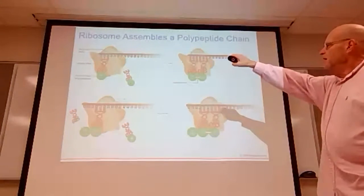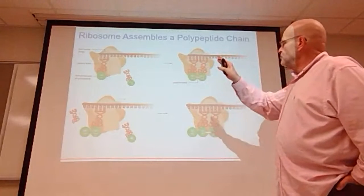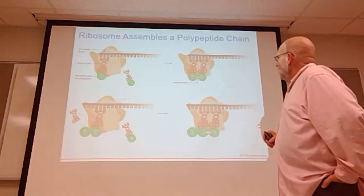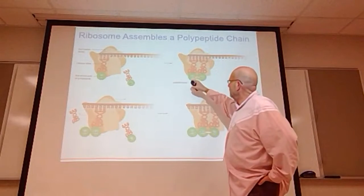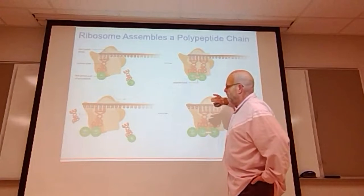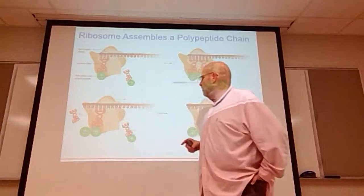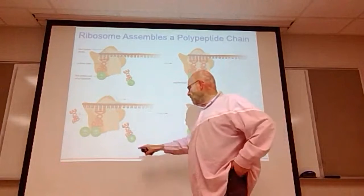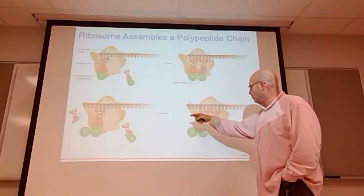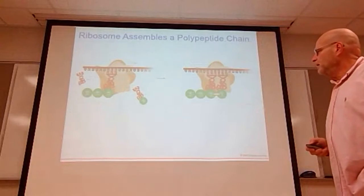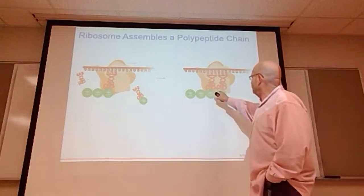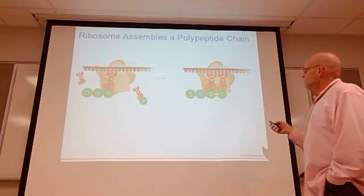In this detailed view: AUG is the start codon; the next three-letter group GUG has the complement CAC, which codes for valine. When valine and the preceding amino acid come into close enough proximity, a peptide bond forms and the previous transfer RNA is released. The next tRNA brings leucine, forms a peptide bond, and its tRNA is released to go pick up another amino acid. Glycine comes in next, and this continues — as each bond forms the previous tRNA is freed — building the polypeptide chain.